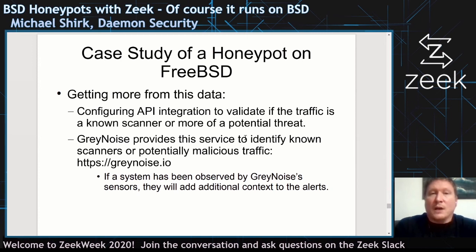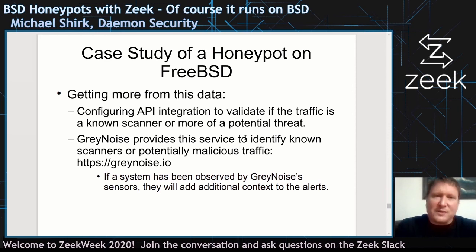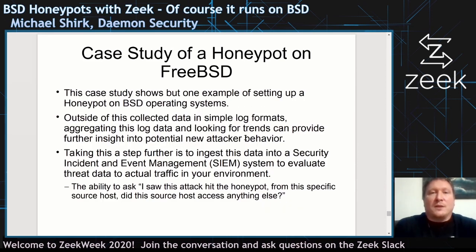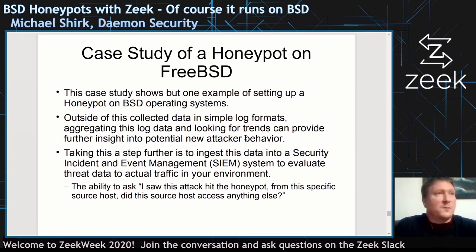If you're not familiar with GrayNoise, you can use its API to verify: is this just a scanner, or is someone actually attacking my system? It looks like there was some kind of SSH brute force I was receiving for that log alert from the first part of the slides. At least it's an example of setting up a honeypot on BSD operating systems. You can also correlate further: I saw this attack hit the honeypot from this specific host — is there anything else I can see from this host? Ways of correlating data into more meaningful threat information.